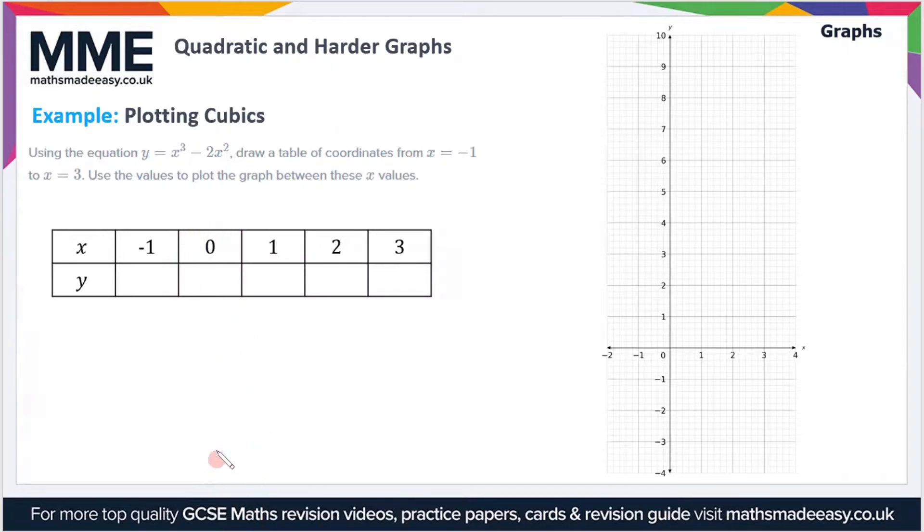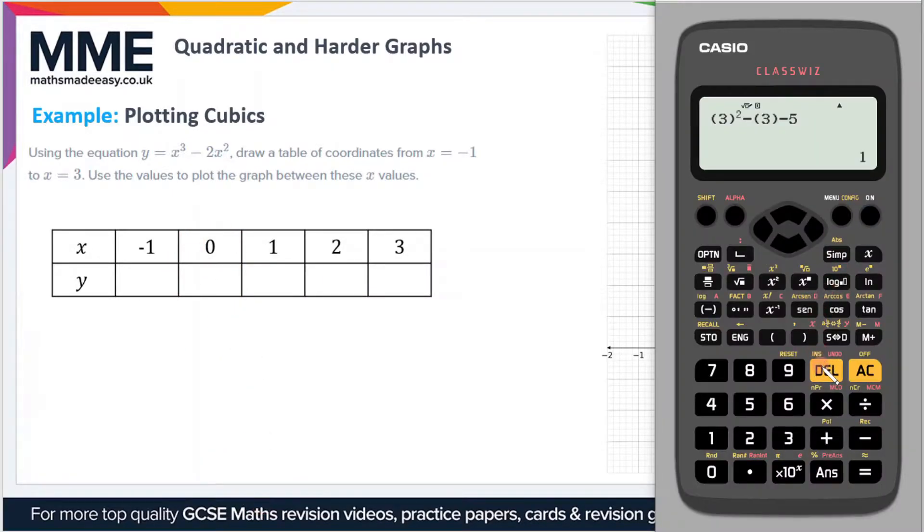I'll do the first one. The equation is x cubed minus 2x squared, so let's use our brackets because I think that makes it clear. The first value is minus 1, so it'll be minus 1, and then use this button here to get the power.